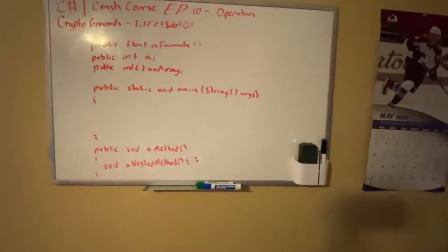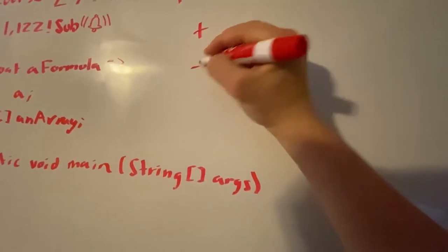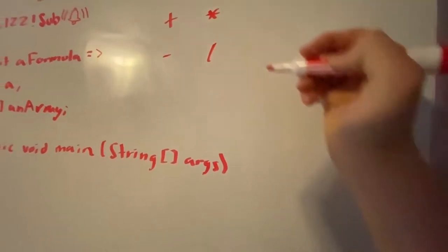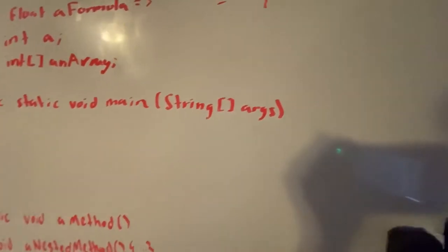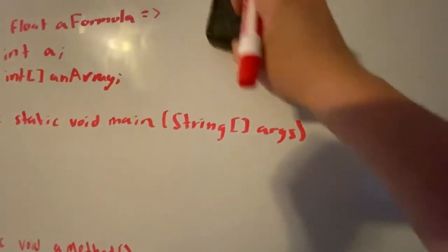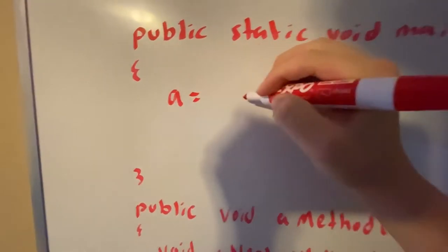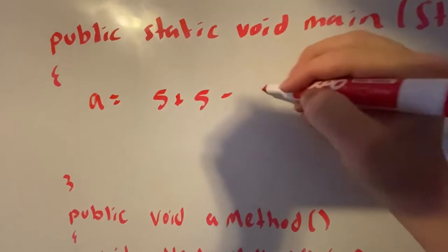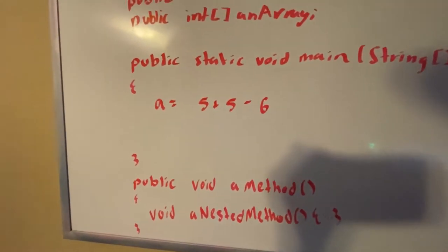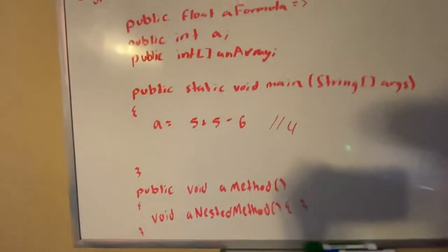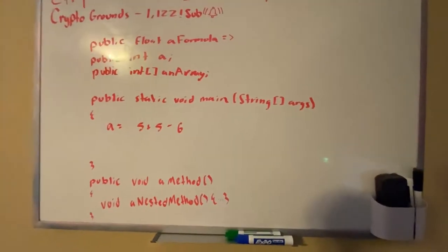Today I'm going to talk about all the basic operators. First, let's start with the obvious: we have plus, minus, multiply, and divide — those are the basic math-related ones. If you want to set a variable, let's say 'a', we could set a equal to five plus five minus six, which would be four.